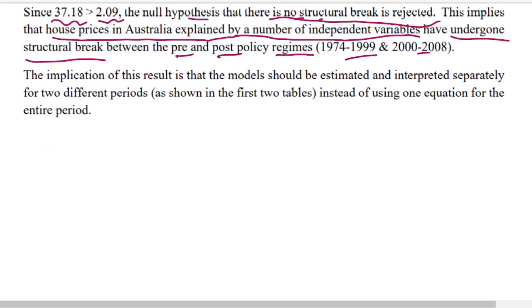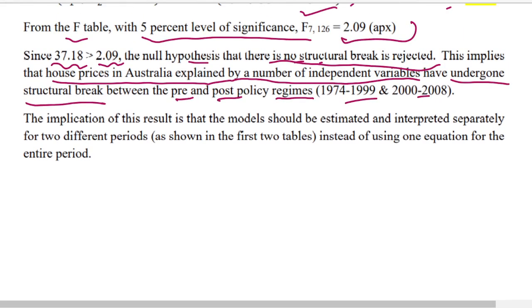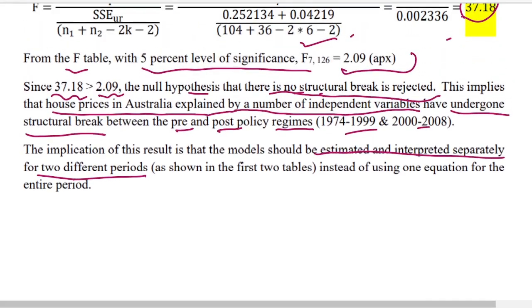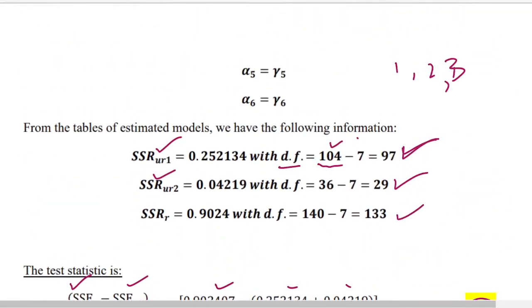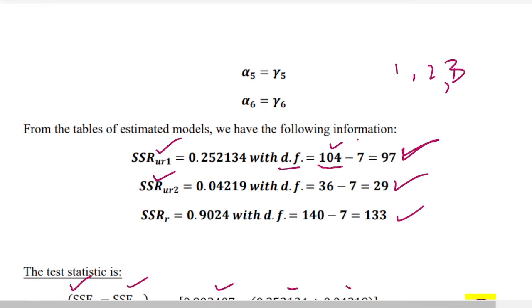This means the model should be estimated and interpreted separately for the two different periods rather than using one equation for the entire period. You can download the full PDF — the link is provided — to see how the language is used and how results are interpreted. See you in the next video, thank you very much.